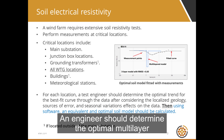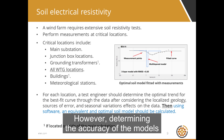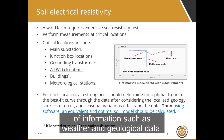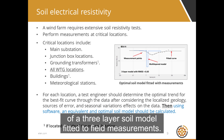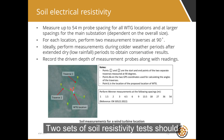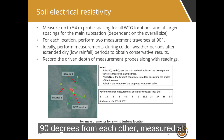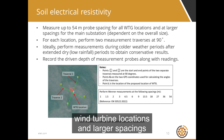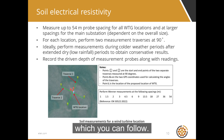An engineer should determine the optimal multilayer soil model for each critical location using software modeling. However, determining the accuracy of the models involves engineering judgment considering other relevant sources of information such as weather and geological data. The image here shows a computer simulation of a three-layer soil model fitted to field measurements. Two sets of soil resistivity tests should be undertaken at each critical location at 90 degrees from each other. Measure at probe spacings up to 54 meters for all wind turbine locations and larger spacings for the main substation. The British Standard provides recommended probe spacings which you can follow.